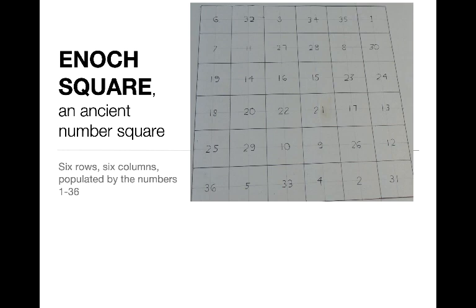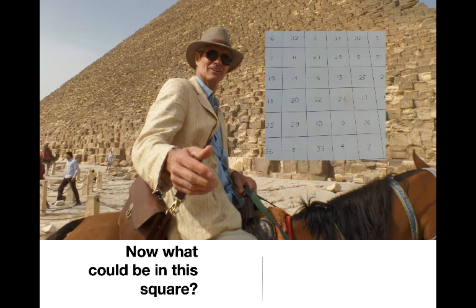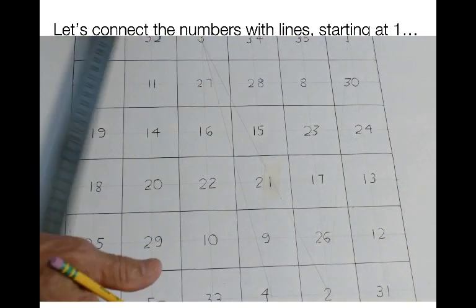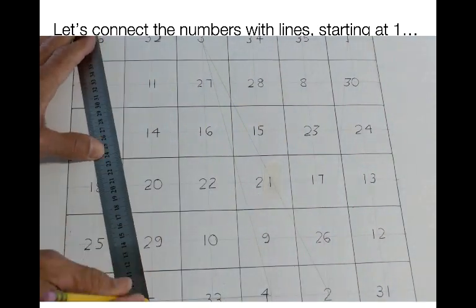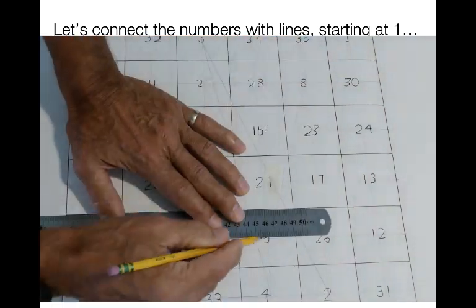So here's the Enochian square. It's six rows, six columns. It's anciently associated with the Great Pyramid and Enoch. And so it's populated by the numbers 1 through 36, which seem to be just in a random order here. So what could be in this square? Well, what I did is I decided to connect the numbers with lines. So I just took a straight edge and went 1 to 2, 2 to 3, 3 to 4, and so on. I continued all the way up to 36.